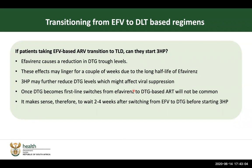Regarding transitioning patients from efavirenz to TLD-based regimens: efavirenz causes a reduction in DTG trough levels. This effect may linger for a couple of weeks because efavirenz has a very long half-life. And 3HP also further reduces DTG levels, which might affect viral load suppression. The recommendation is that if someone was on efavirenz and switched to DTG and we need to consider TB preventive therapy — specifically the short-course 3HP — we might want to start 3HP two to four weeks after the switch.